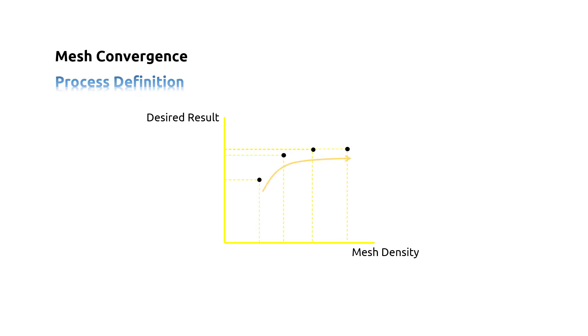The mesh is said to be converged when further mesh refinement produces a negligible change in the solution. When you plot your result versus mesh density, if you reach a plateau same as here, you can say your results are converged.